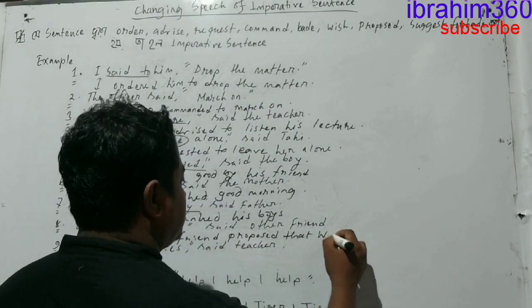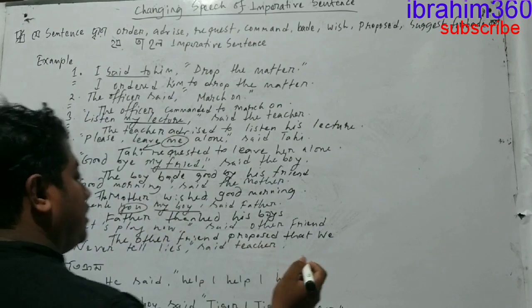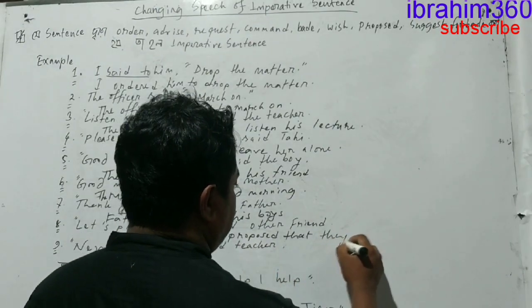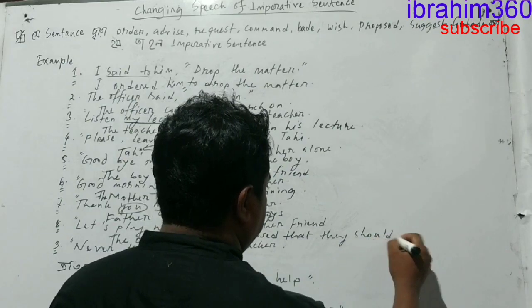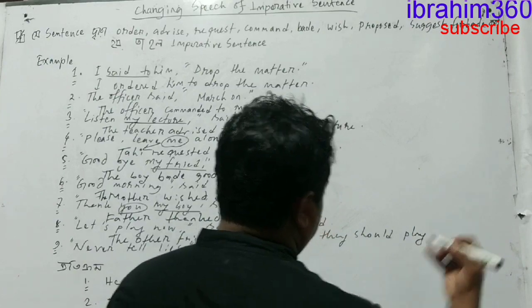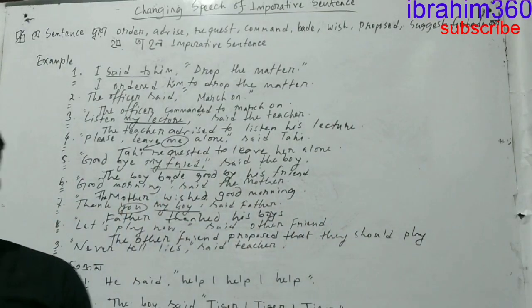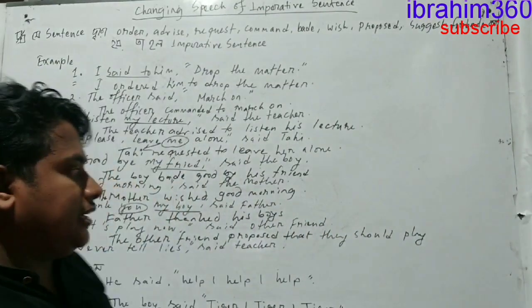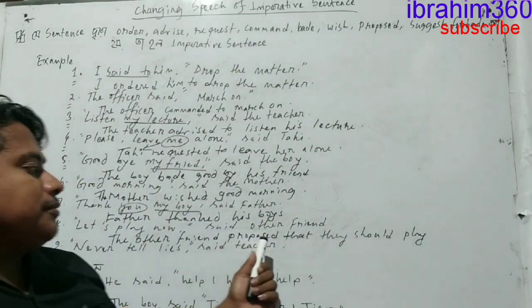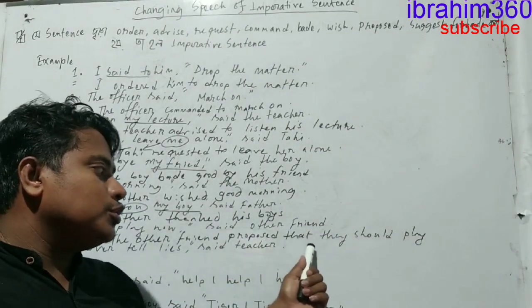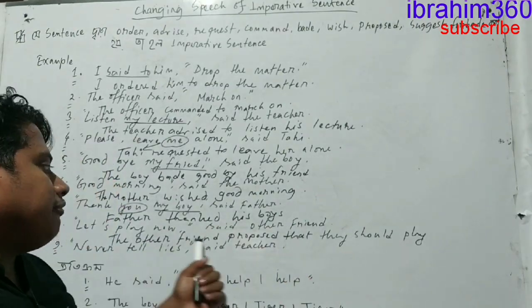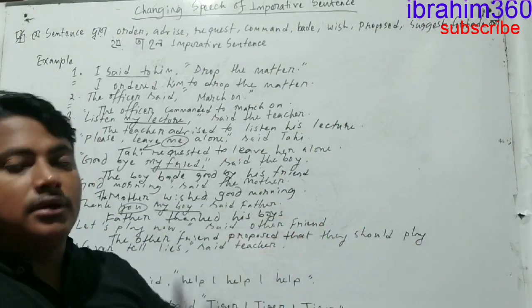Let us — 'as', 'we', 'they' — they should — should play. They should play. Now, we can alternatively say: the other friend proposed to play now, or alternatively: the other friend proposed playing now.